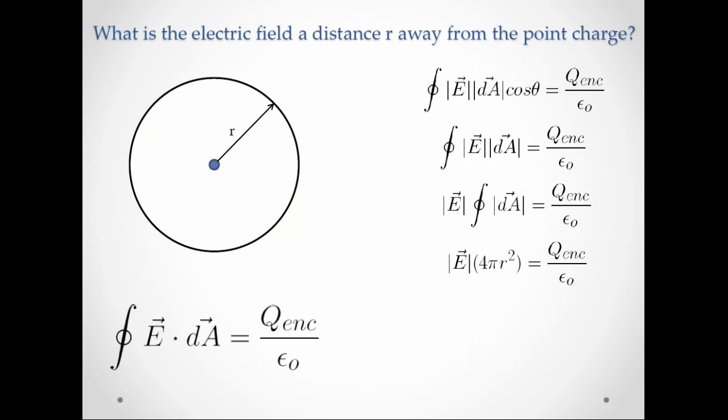And now I can just finish up with a little bit of math. So I'm going to divide by 4 pi r squared. And I notice that 1 over 4 pi epsilon naught is just k. And so I can substitute in k. I can substitute in q for q enclosed. That's the amount of charge enclosed by my sphere. And I get kq over r squared.